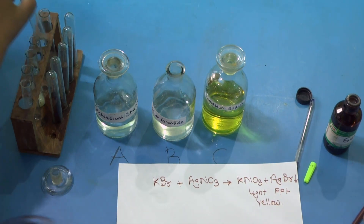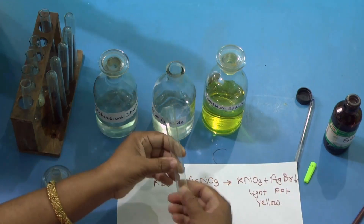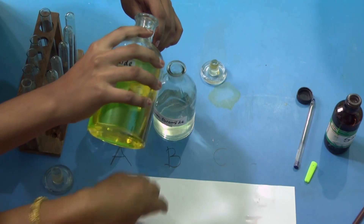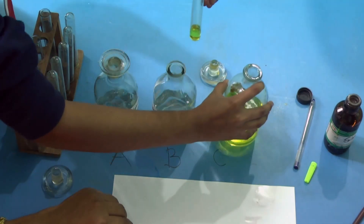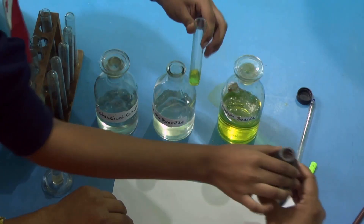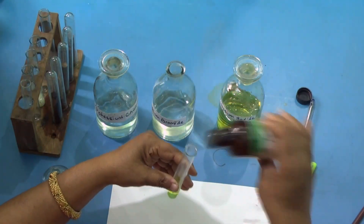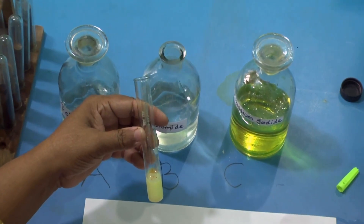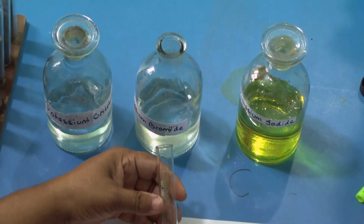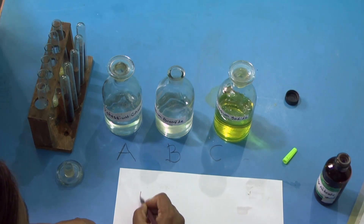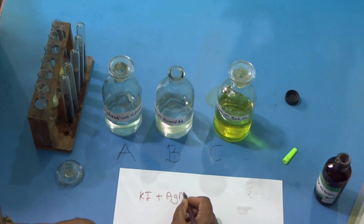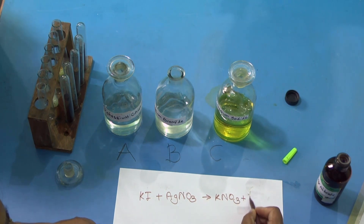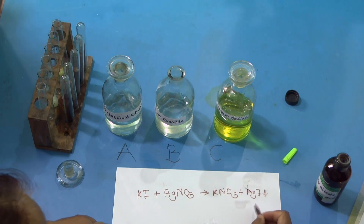Now in the third test tube, test tube C, we will take potassium iodide solution and pour silver nitrate. Children, you can see a bright yellow PPT. With potassium iodide, when I added AgNO3, we got KNO3 plus AgI, which is a bright yellow PPT.